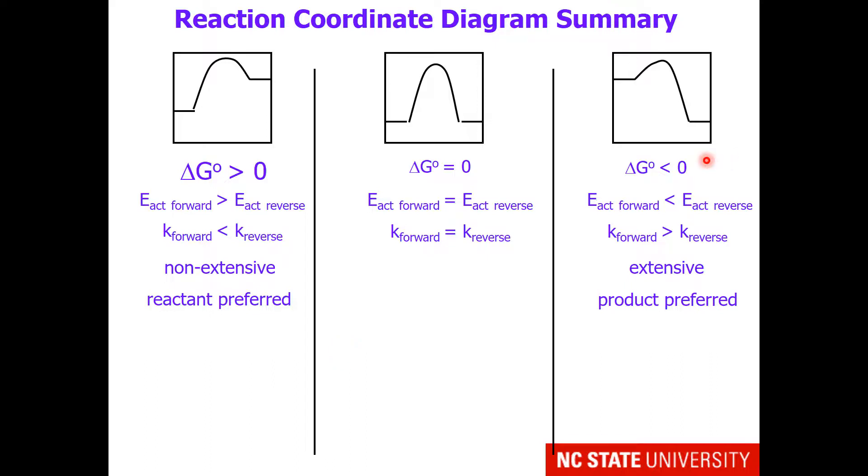Here is a summary of the different reaction coordinate diagrams. When the topic was introduced, delta G° was negative. We had a diagram that was lower on the product side than on the reactant side. That means energy of activation forward is less than energy of activation reverse and rate constant forward is greater than rate constant reverse. For this type of diagram where delta G° is negative, we say the reaction is extensive and prefers the product side.